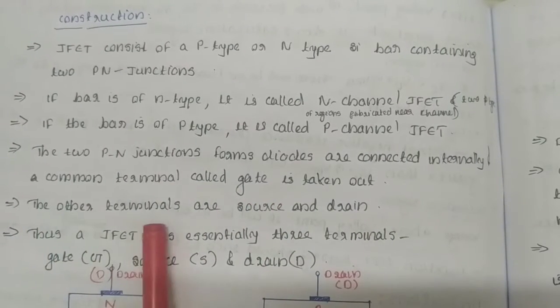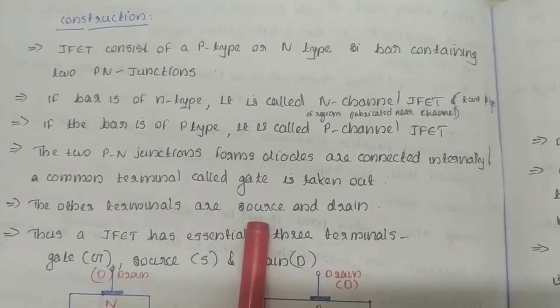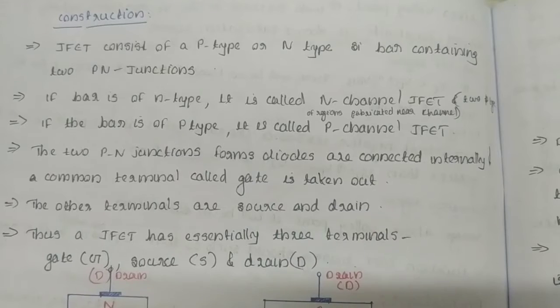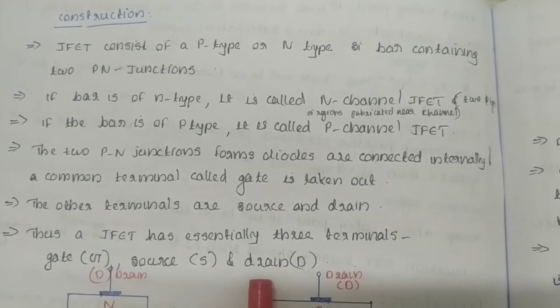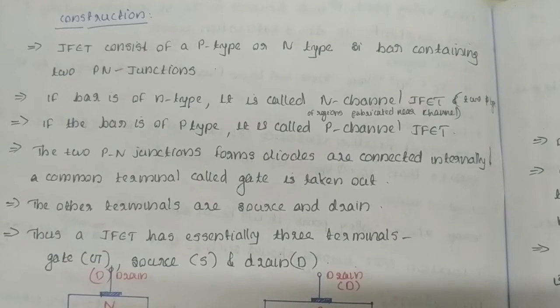The other terminals are source and drain. Thus, JFET has essentially three terminals: gate, source, and drain.